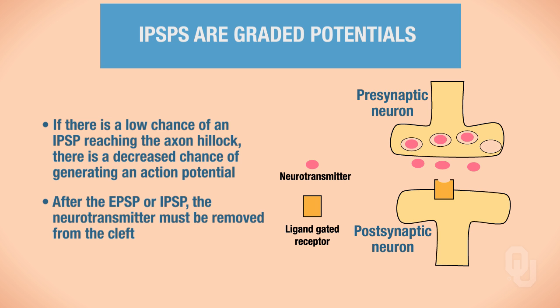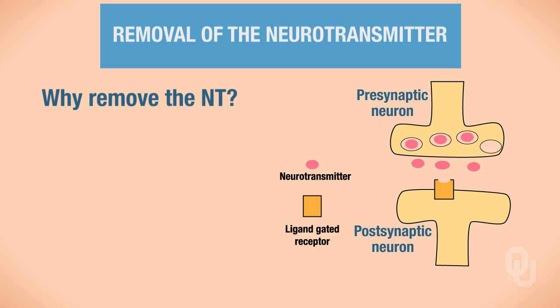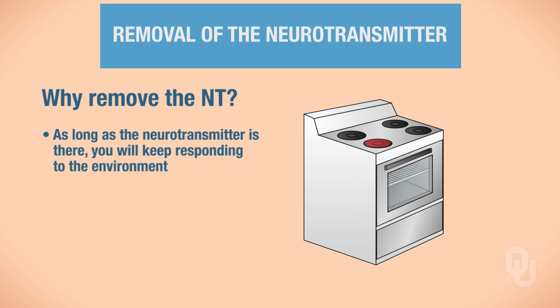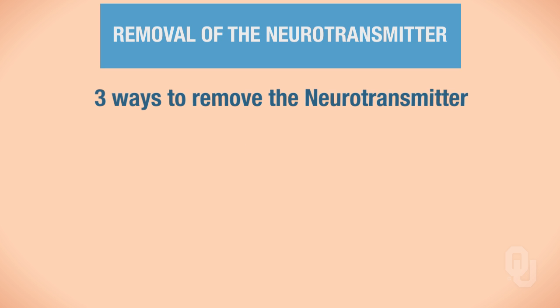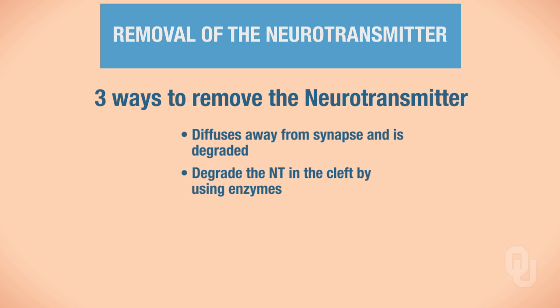After the postsynaptic membrane undergoes either an EPSP or IPSP, the neurotransmitter must be removed from the synaptic cleft. As long as the neurotransmitter remains, you continue responding — for example, if you put your hand on a hot stove, you want to withdraw once and stop. There are three ways to remove the neurotransmitter: it can diffuse away from the synapse and be degraded later, it can be degraded in the cleft by enzymes, or it can be taken back up via reuptake.